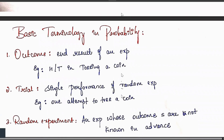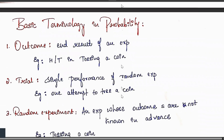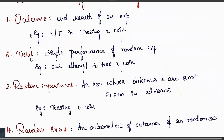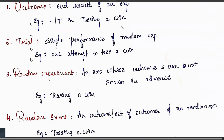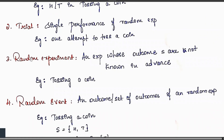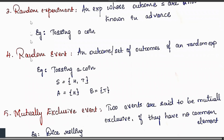Before starting with the module, you need to know some basic definitions that may appear in the exam. First, outcome — it is the end result of any experiment, like head or tail in tossing a coin. Next, trial — a single performance of a random experiment; one attempt to toss a coin is called a trial. Random experiment — any experiment whose outcome is not known in advance, like tossing a coin.